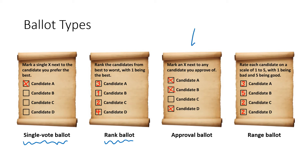Now we have two new kinds of ballots: an approval ballot, where we put a mark next to any candidate we approve of, so we can vote for more than one candidate; and a range ballot, where we rate each candidate on some scale. In this example the scale is from one to five, but it can be anything, and this also allows us to rate candidates in a tied manner.